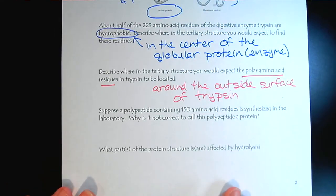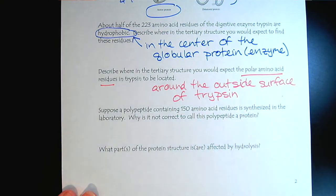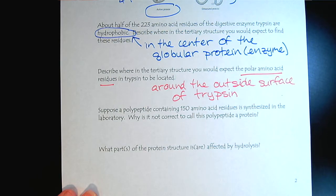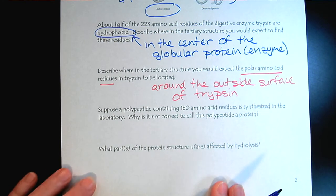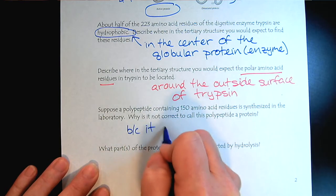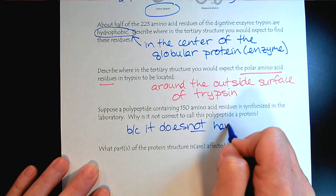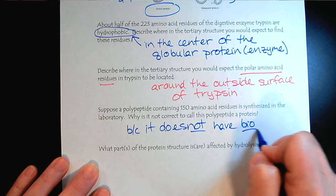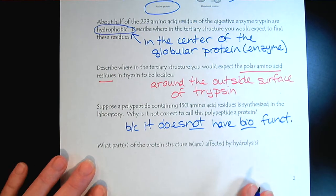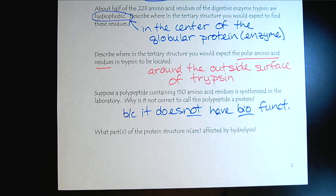And then, suppose that a polypeptide containing 150 amino acid residues is synthesized in the laboratory. Why is it not correct to call it a protein? Because it does not have biological function. Let's keep this distinguished.